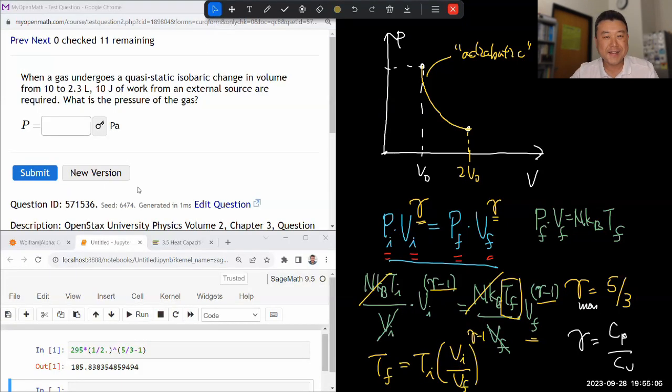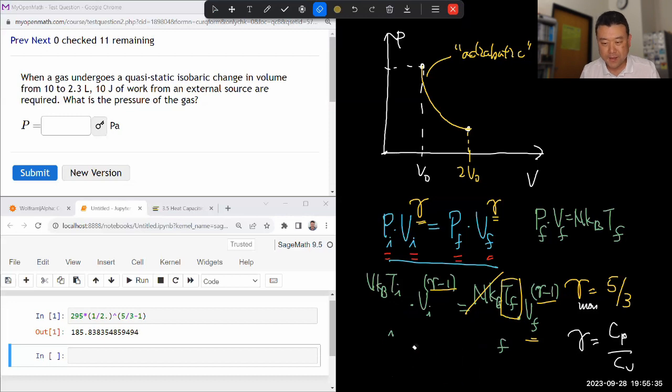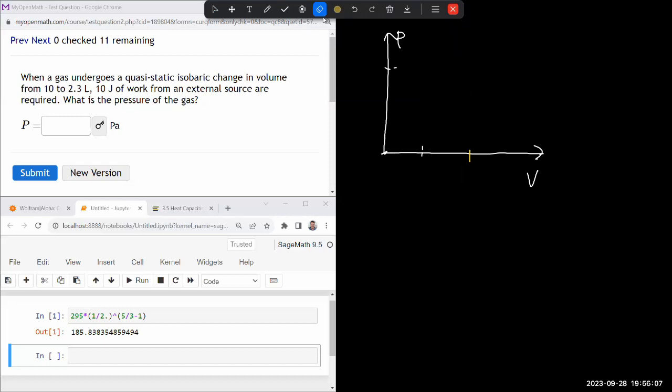So this question says, when a gas undergoes a quasi-static isobaric change in volume from 10 to 2.3, that's going to be compression. 10 joules of work from an external source are required. What is the pressure of the gas? So I guess the tools that I need to use are completely different. So I'm still going to need a PV diagram to kind of think my way through. So let me start out with a PV diagram.